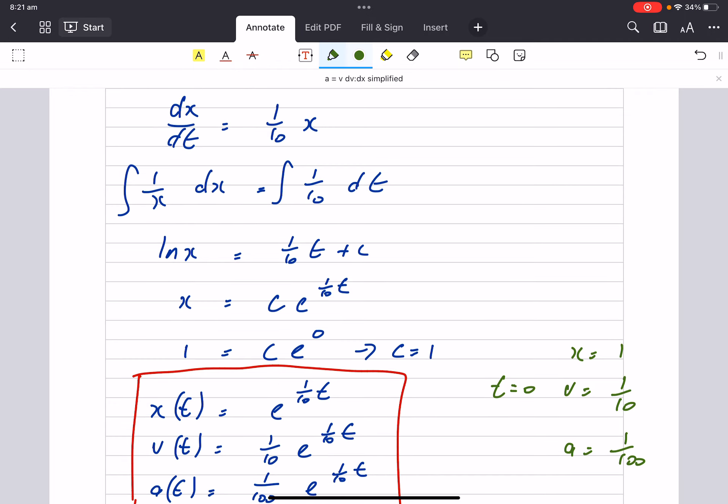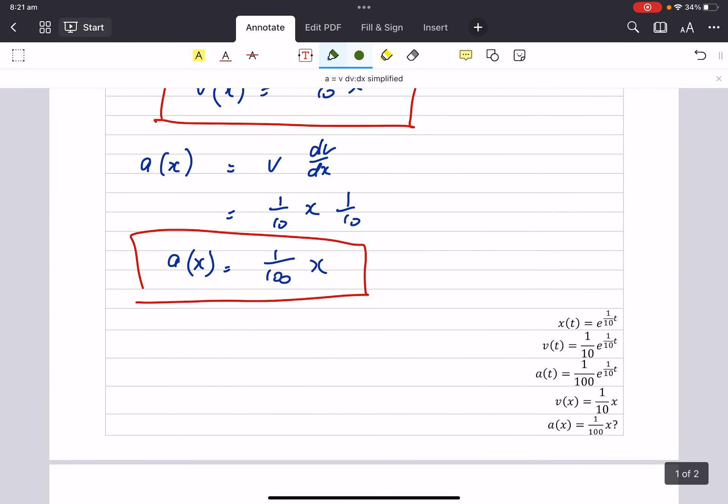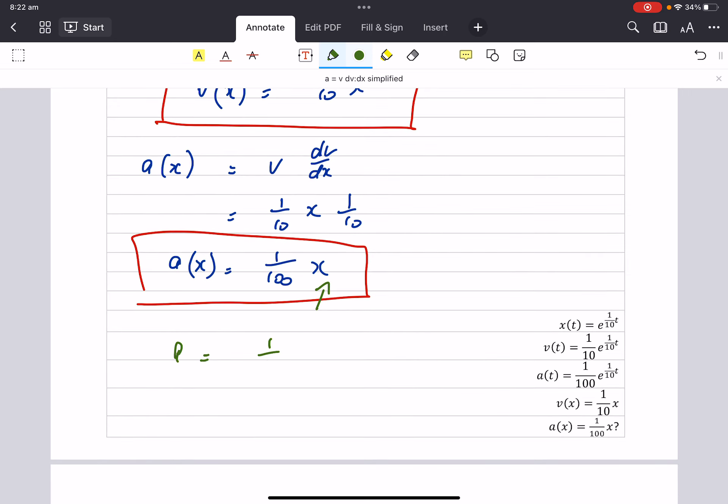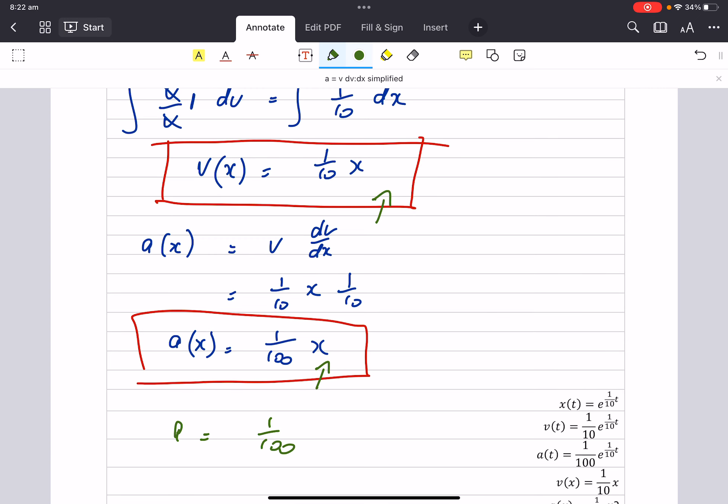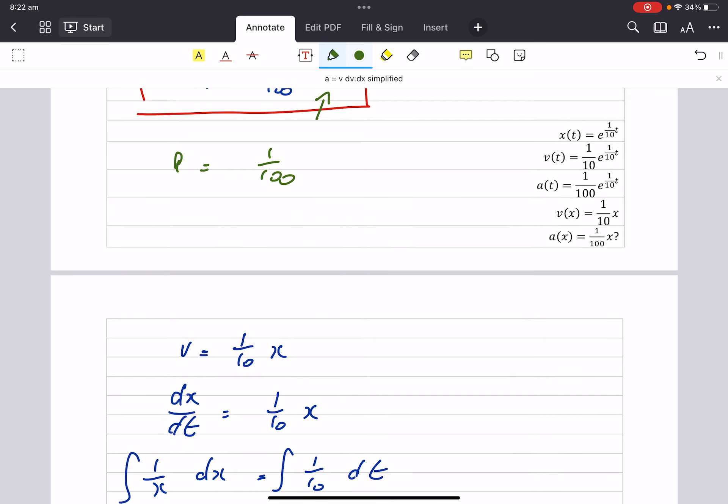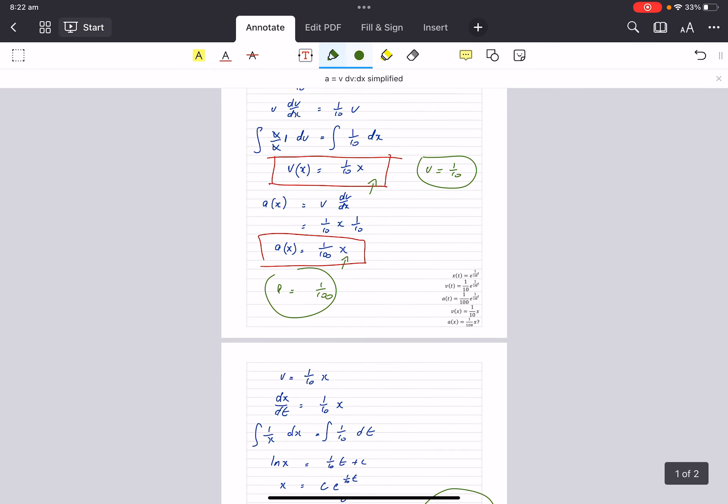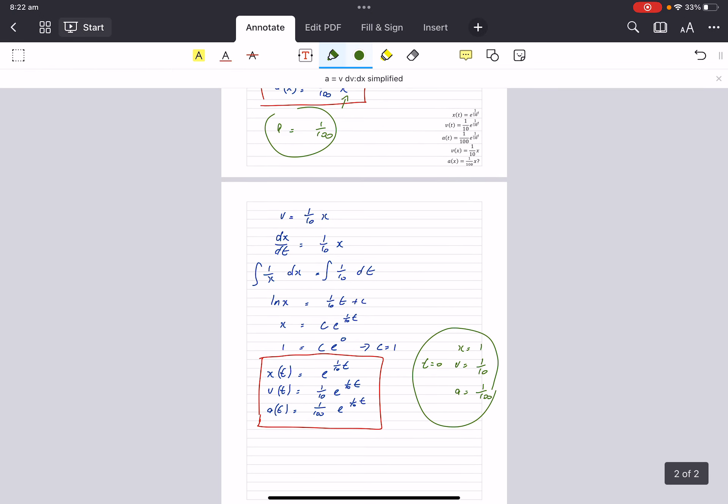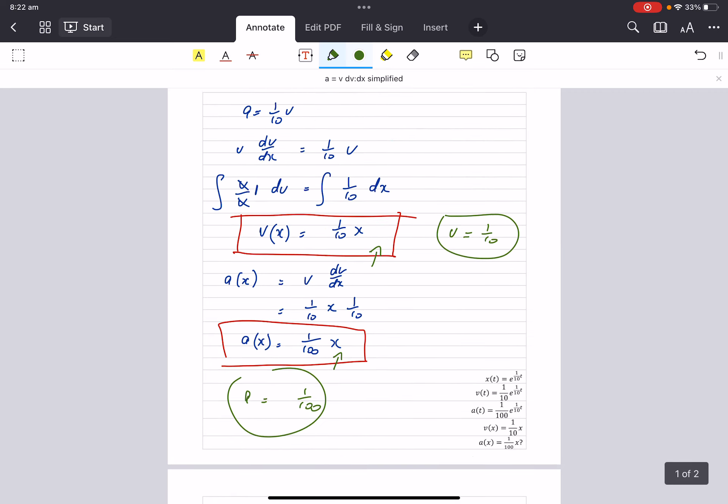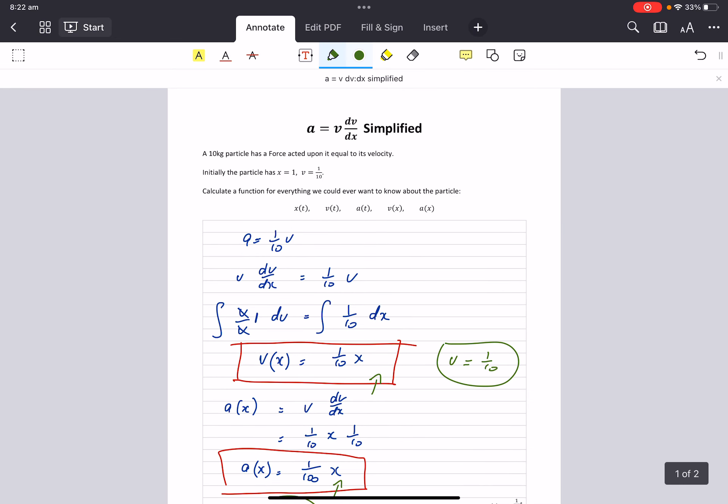I can come back up here and go, hey, initially x is one on 10. So you see those answers there. They are the same as these answers here when x is 1. So I've got a function that gives me anything I ever want to know about this particle in terms of anything that I'm given. Anyway, spend some time in that. It's easier than you think. Maths is great because it all agrees with each other. Have some fun.